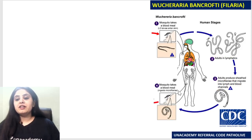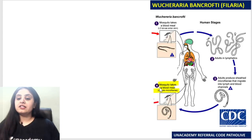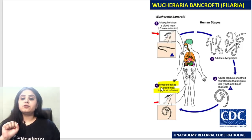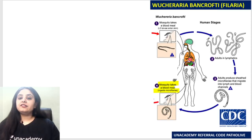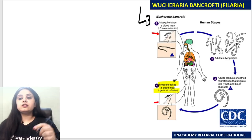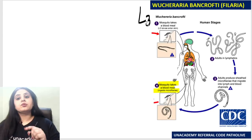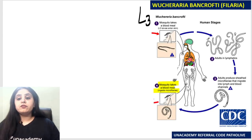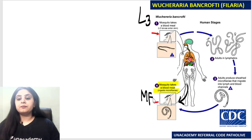For the disease to spread, when the mosquito takes a blood meal again, it picks up the microfilaria from the blood. So the infective form going from mosquito to man is the L3 larva, and the form going from man to the mosquito in a blood meal is the microfilaria.